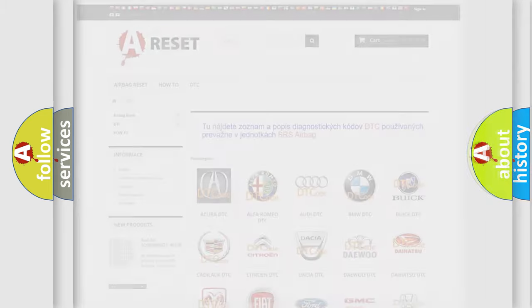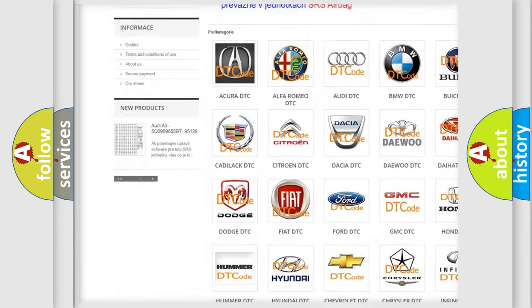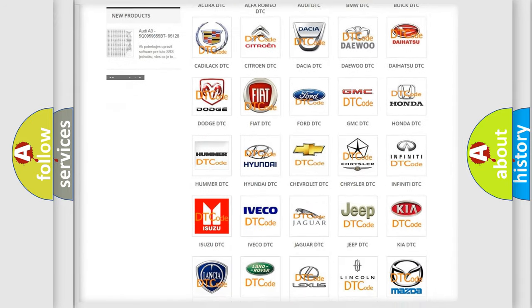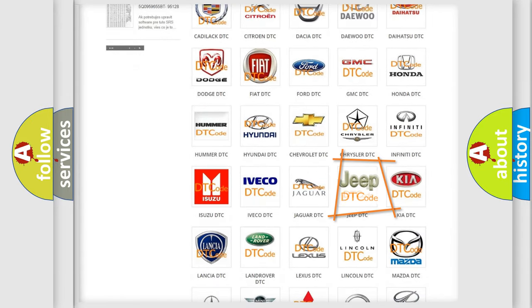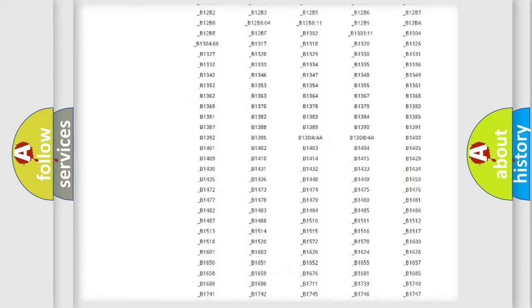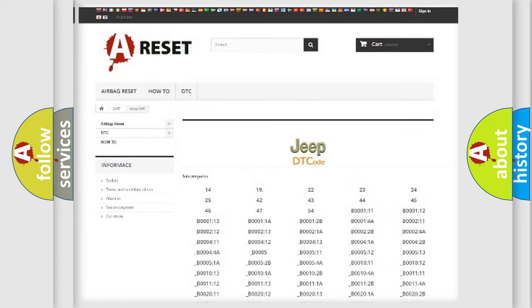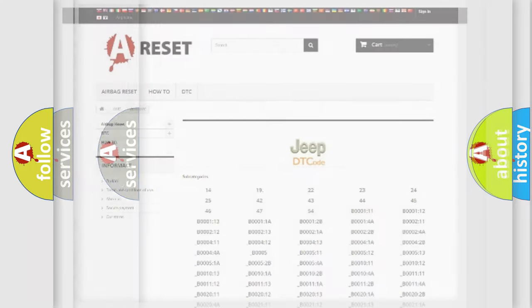Our website airbagreset.sk produces useful videos for you. You do not have to go through the OBD2 protocol anymore to know how to troubleshoot any car breakdown. You will find all the diagnostic codes that can be diagnosed in Jeep vehicles, and many other useful things.